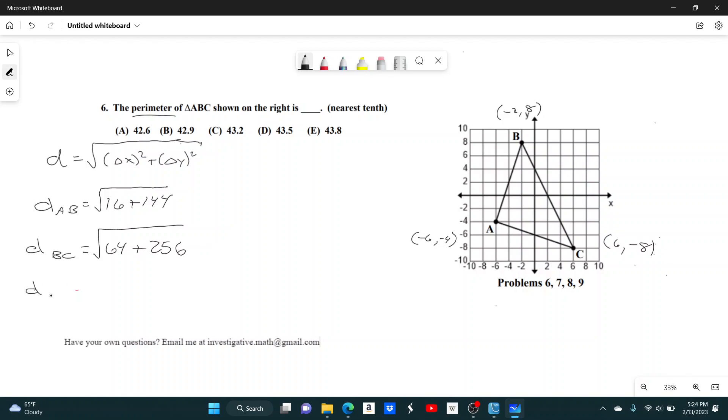And then my last side from C to A, my change in x, negative 6 to 6, that's 12 squared is 144. And then my change in y from negative 4 to negative 8, that's 4 squared is 16.